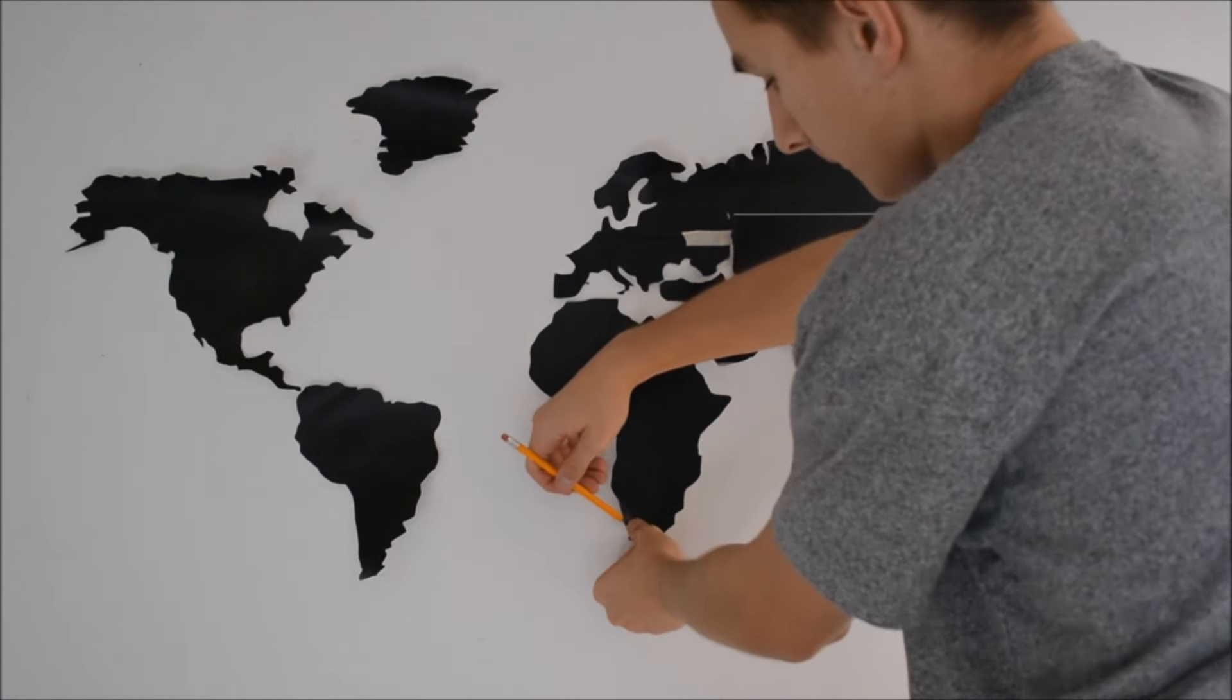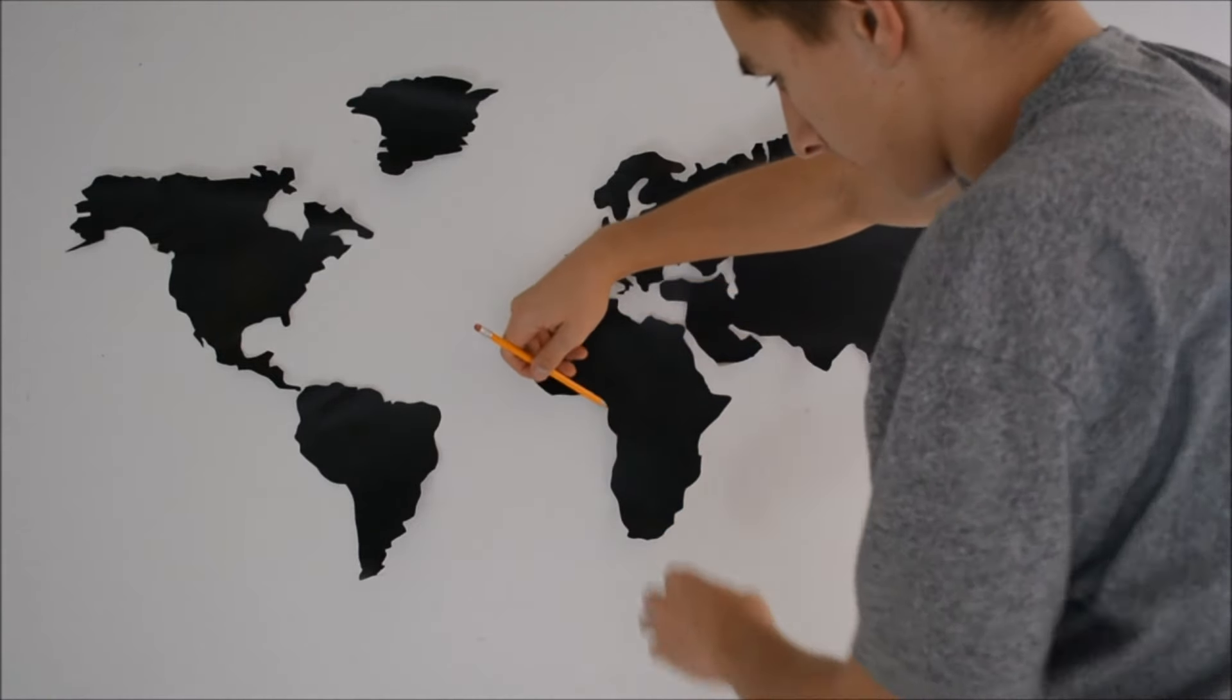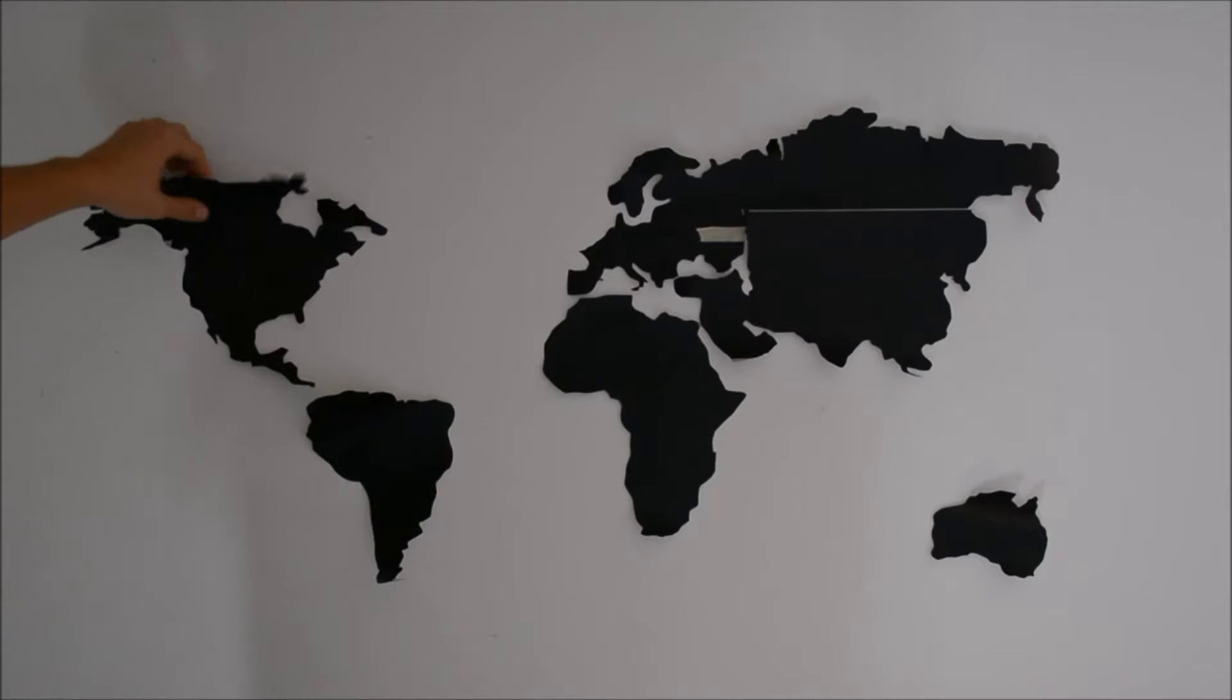Once all your pieces are cut out, place a little tape on the back of your countries and while looking at a map reference, eye where you think each one should go.